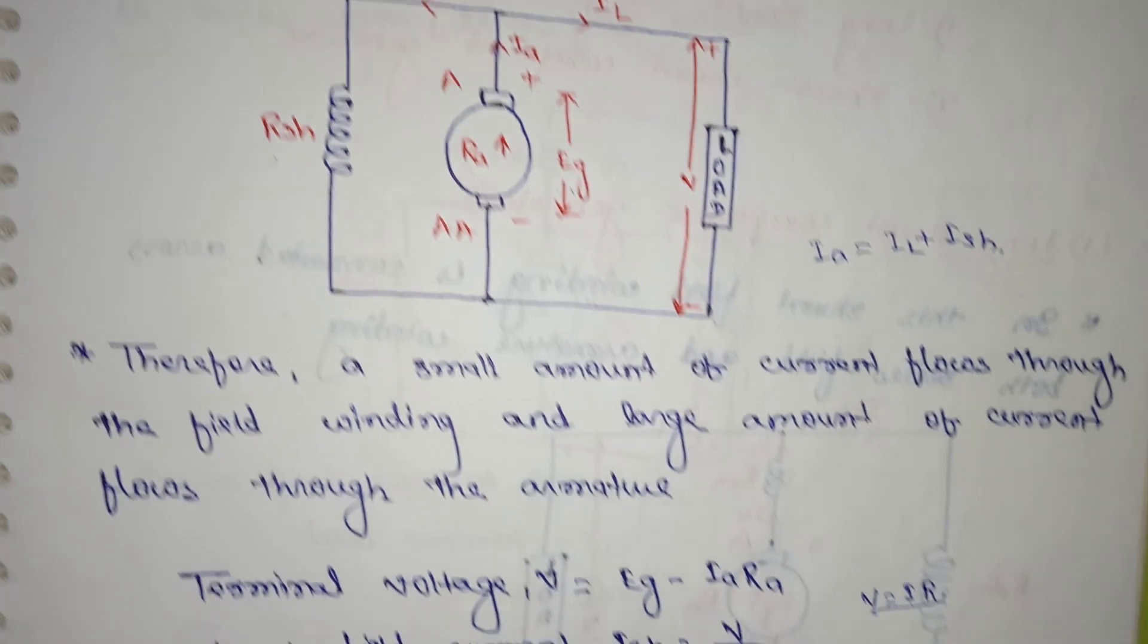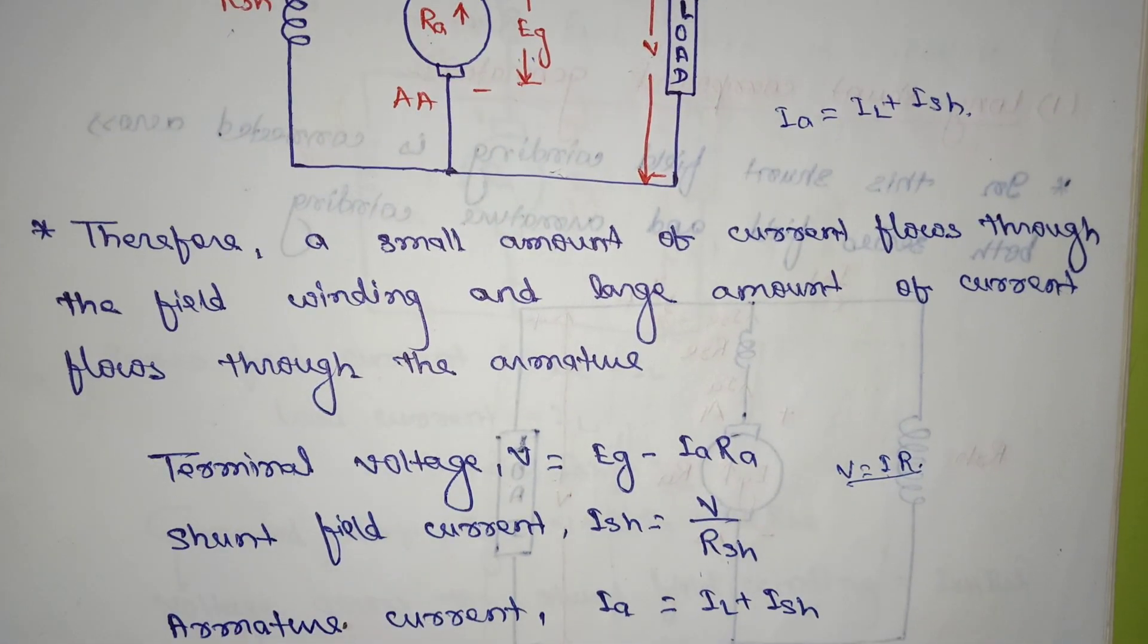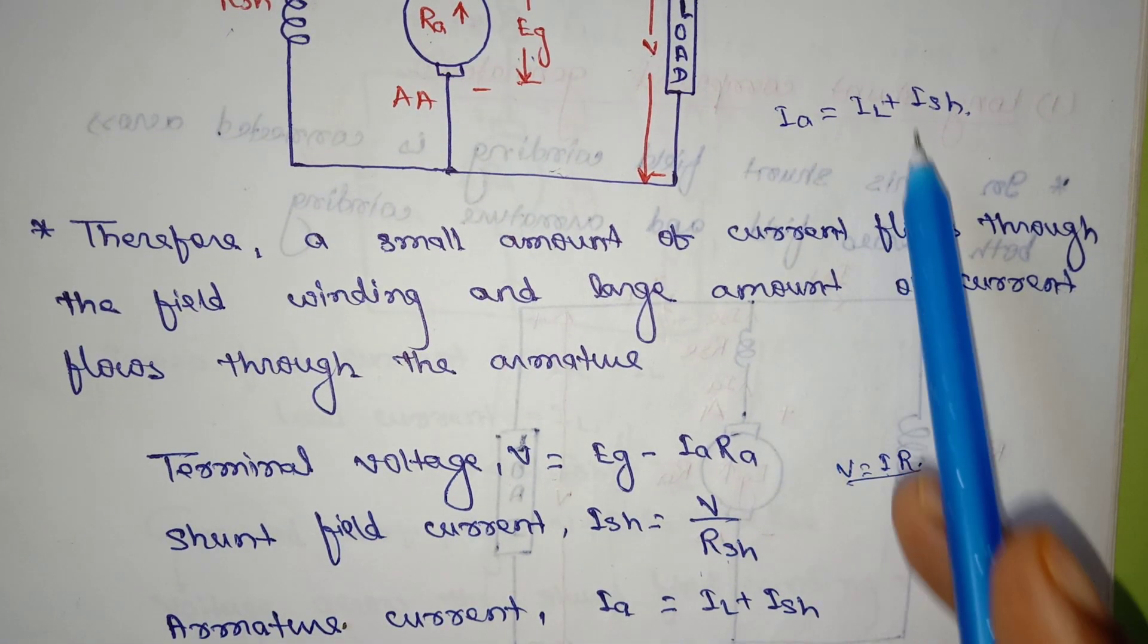Ish is equal to V by Rsh. The armature current, as I already told you, Ia is equal to Il plus Ish.